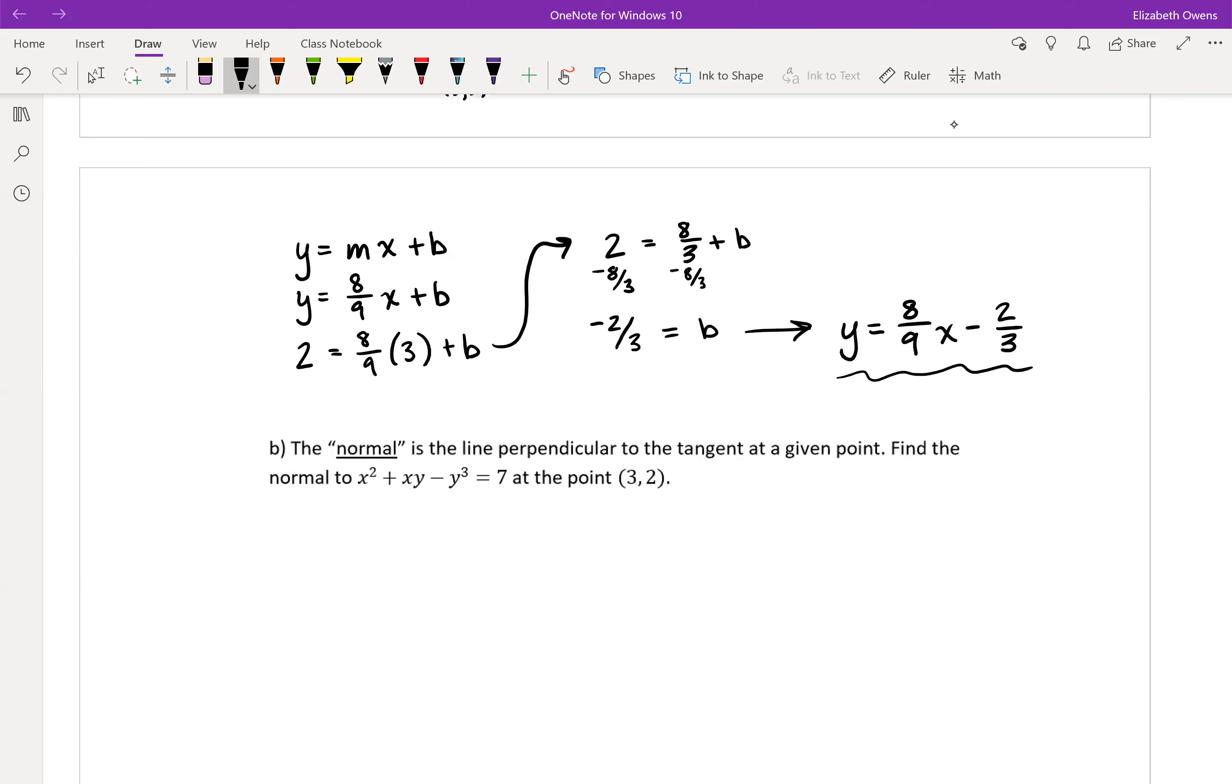Now the nice thing with this particular problem is that we aren't actually going to have to do any calculus for finding this normal line right now because we just found the tangent line. Because the normal is the line perpendicular to the tangent and it's at the same point, our given point here is still (3, 2).